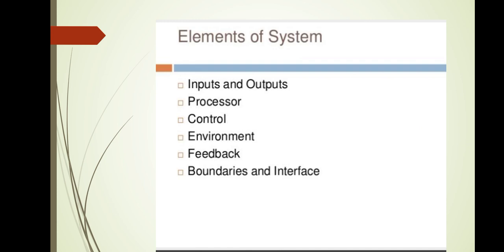What are the elements of a system? Inputs, outputs, processor, control, environment, feedback, boundaries, and interface. Input is what is fed into the system. Output is what we attain from the system. Processor refers to the methods or technologies used. Control governs how it works to attain the common objective. Environment is the overall area in which the system is composed. Feedback comes from the output.